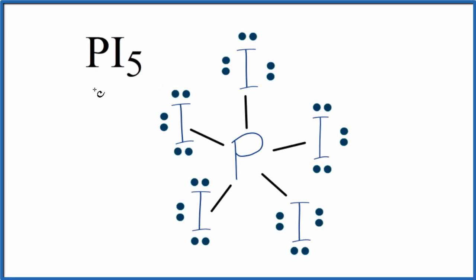In this video we'll look at the Lewis structure for PI5, phosphorus pentaiodide. I've already drawn it out here and we'll look at this Lewis structure and explain why this is the best or most likely Lewis structure.